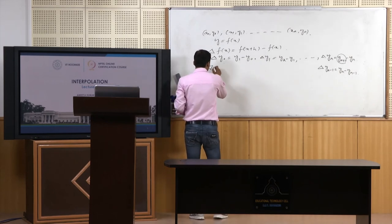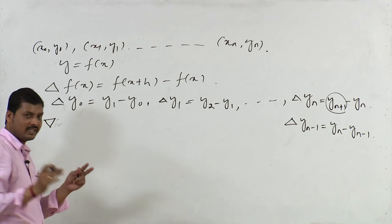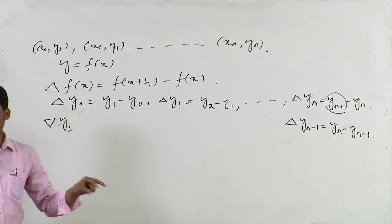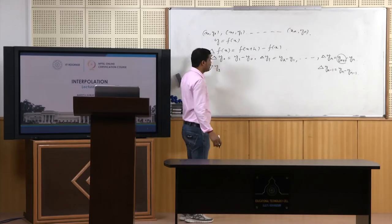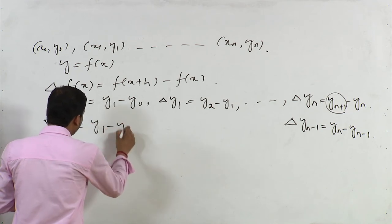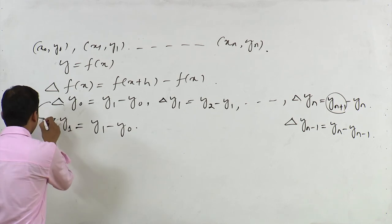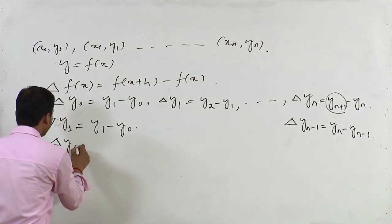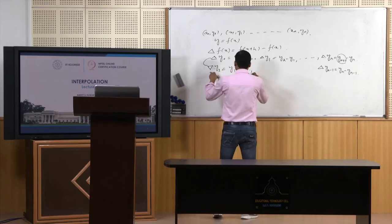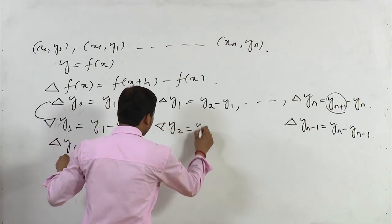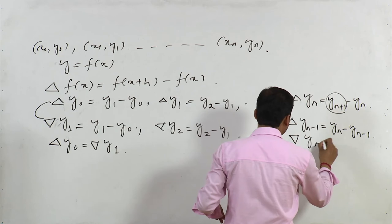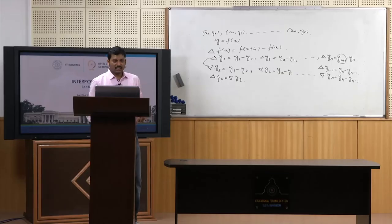The backward difference operator uses the nabla (∇) symbol, which moves functional values towards the back of the point. We can write ∇y1 = y1 − y0, which equals Δy0. Similarly, ∇y2 = y2 − y1, and ∇yn = yn − y(n−1).